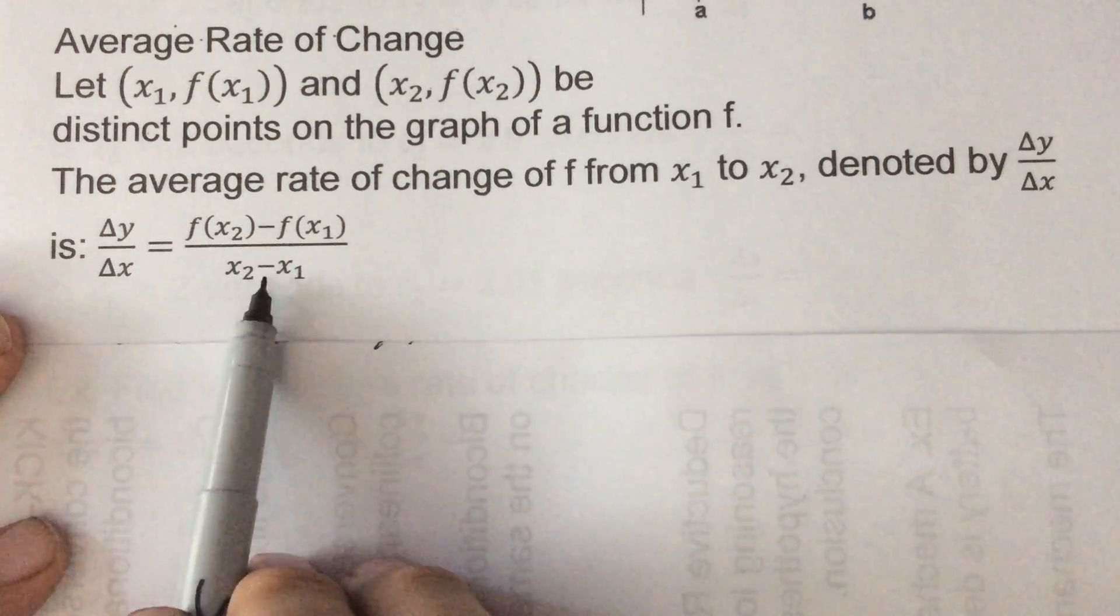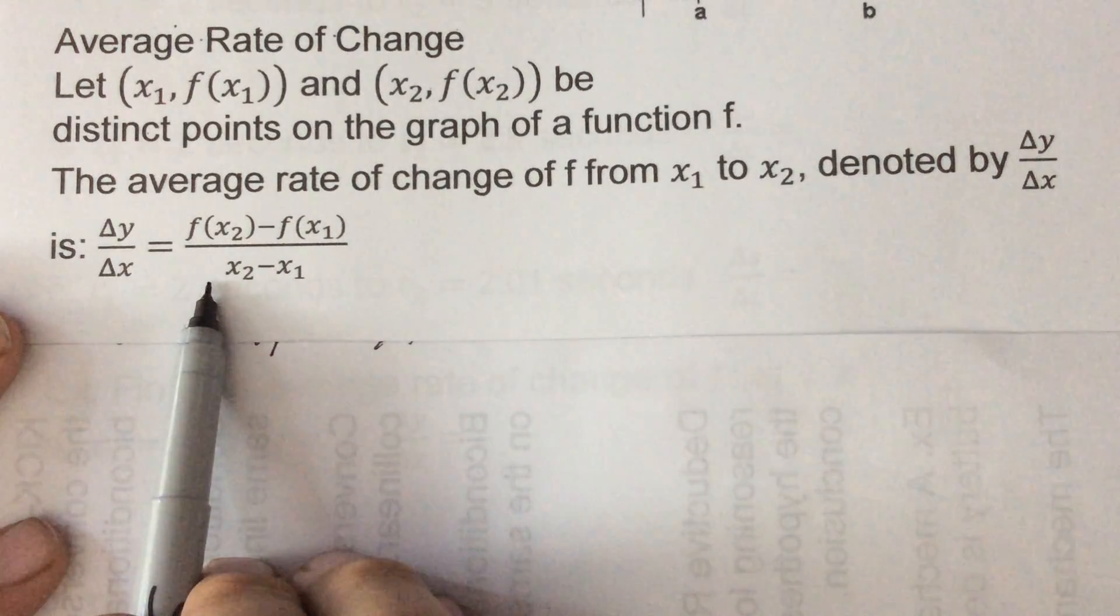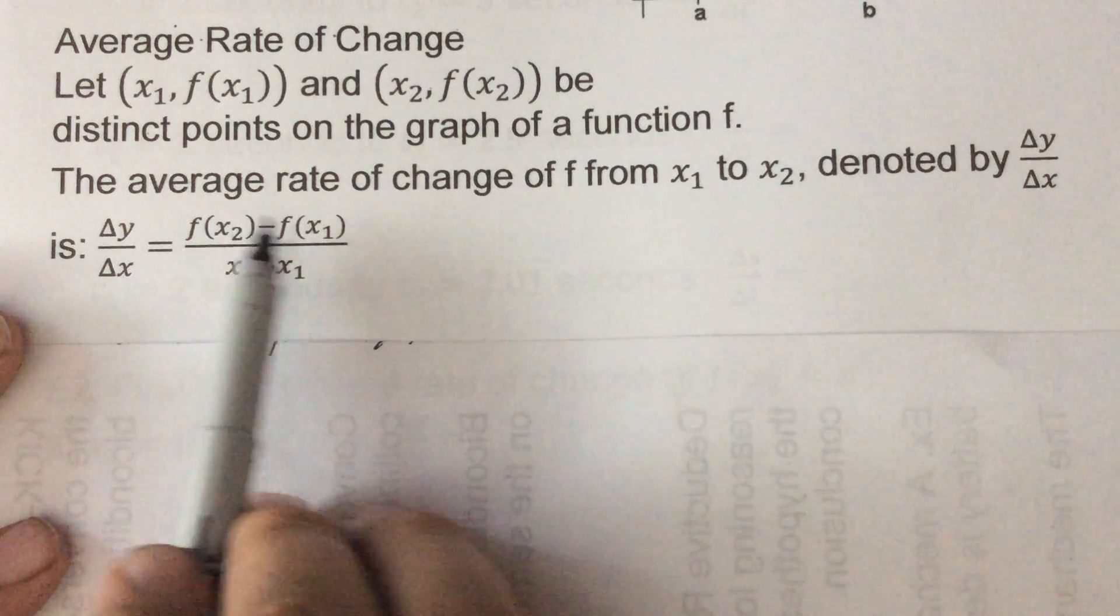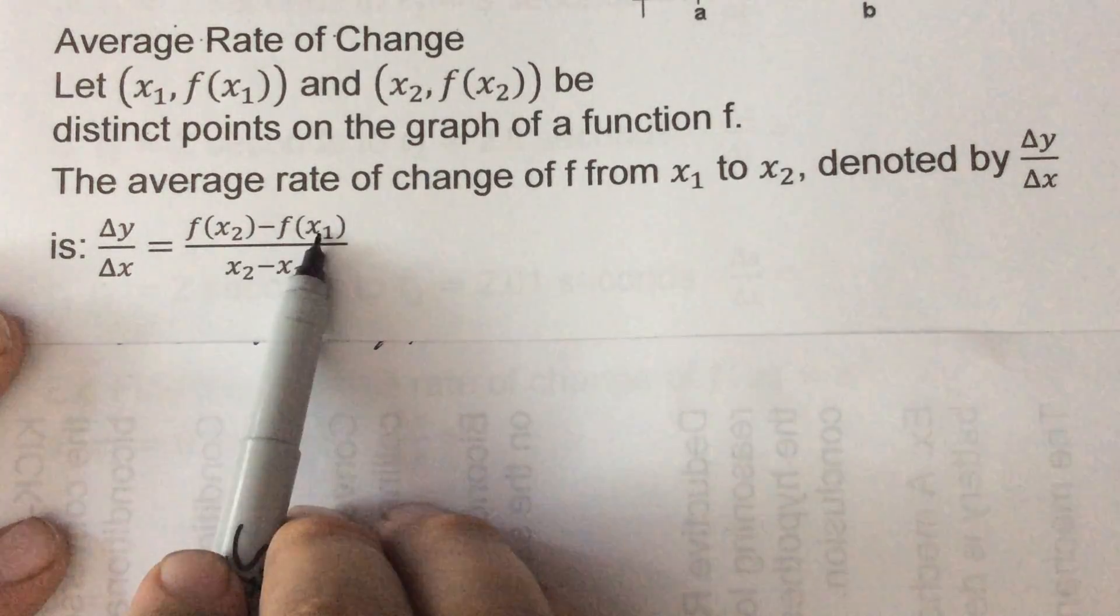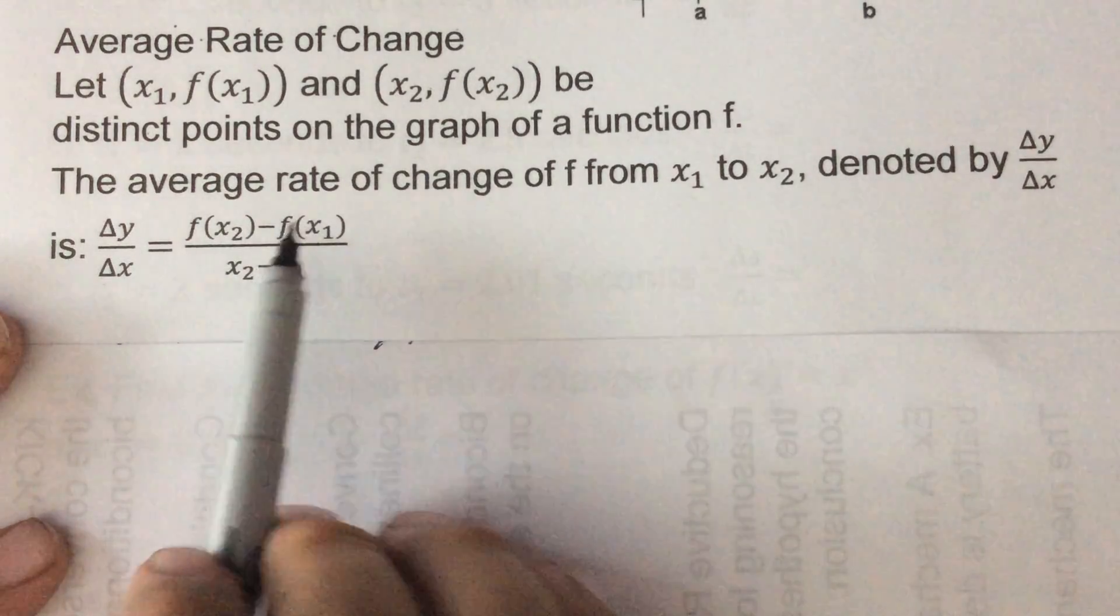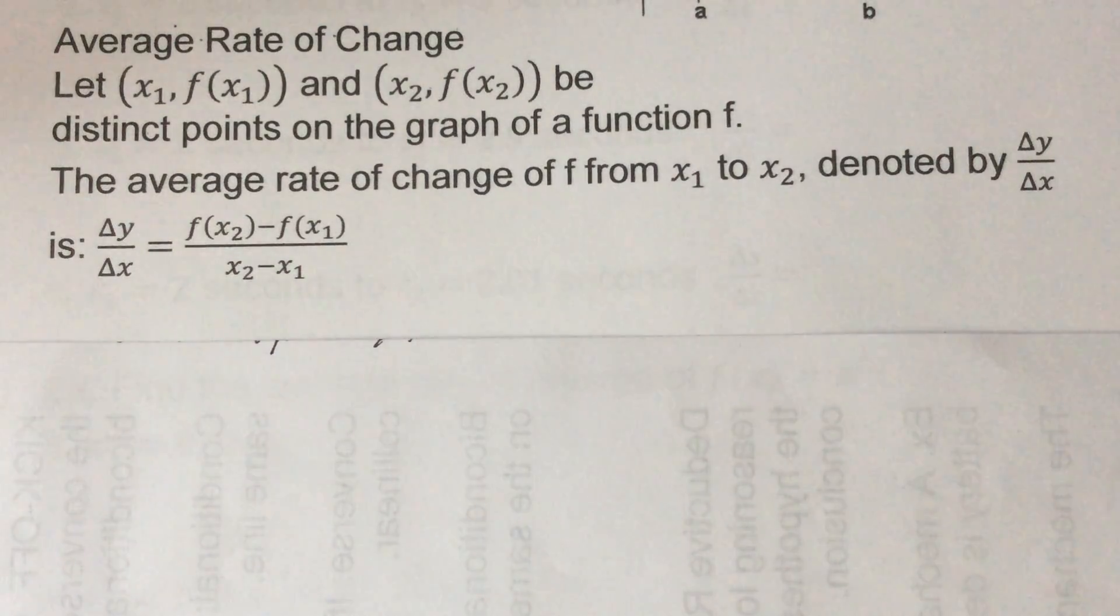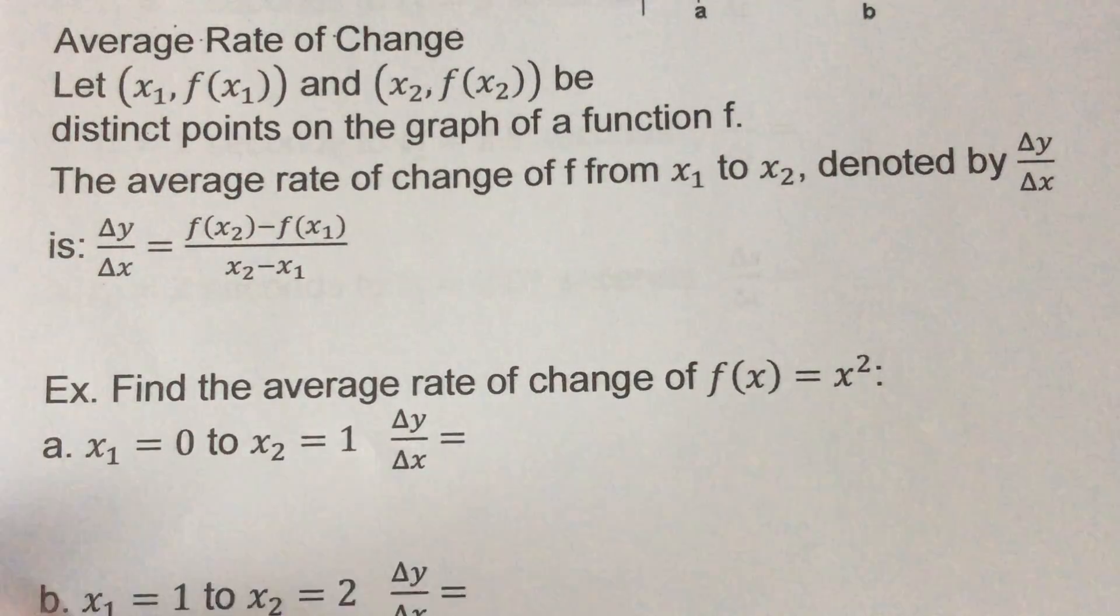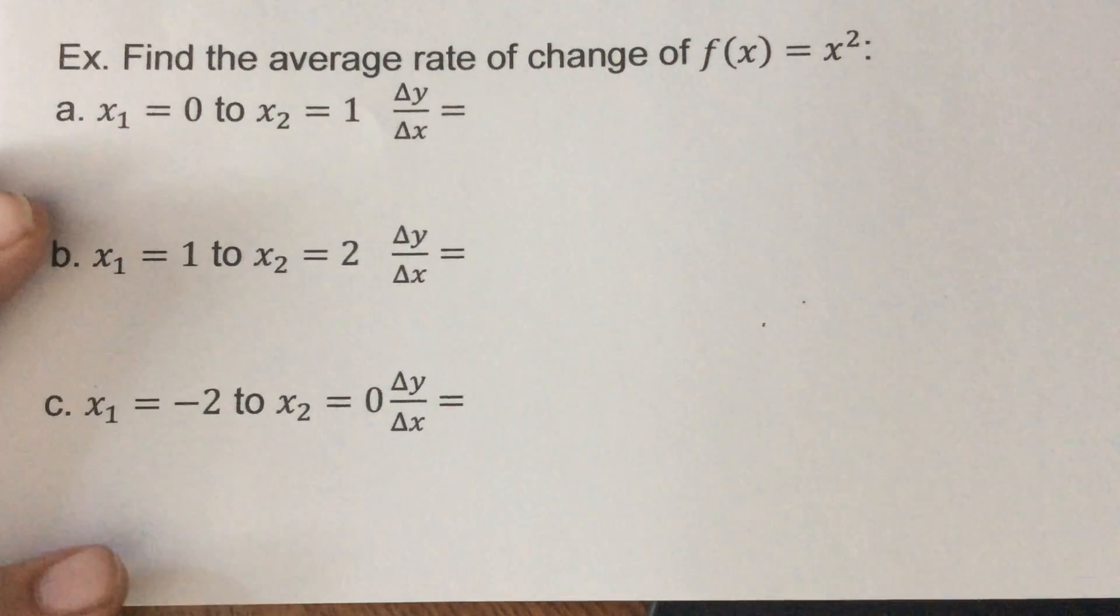So what we can use to find average rate of change is the change in y over the change of x. So we take our two x's and we subtract them on the bottom, we take each of those x's and put it into our function, and the values we get we would subtract for our top. So it's like what we've been doing with slope only now you have to find the y's before you subtract them.